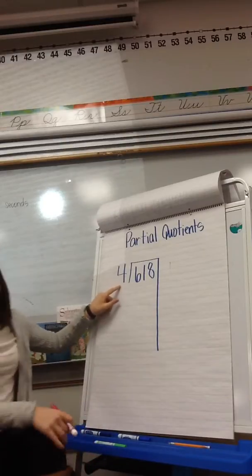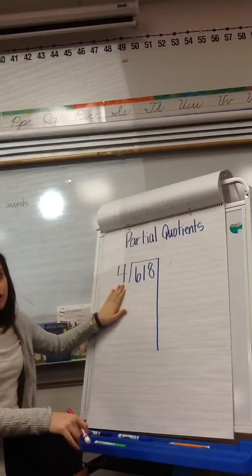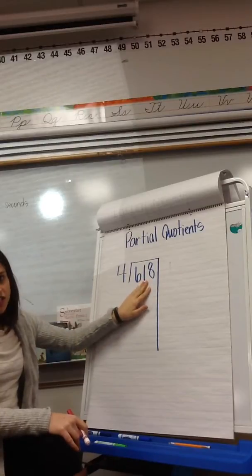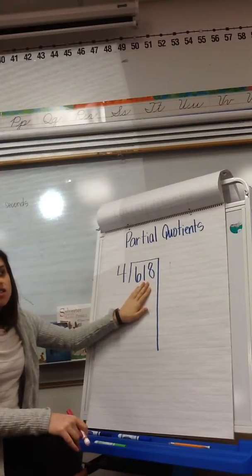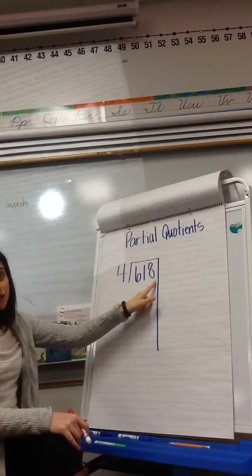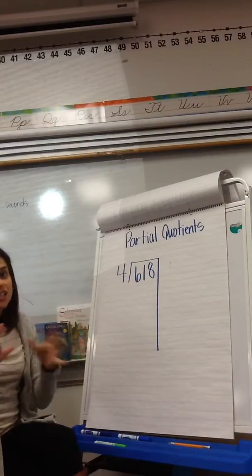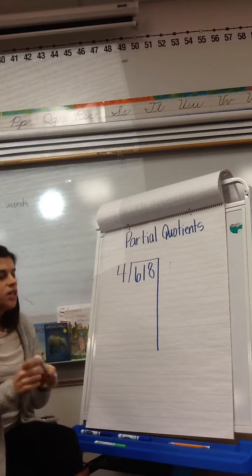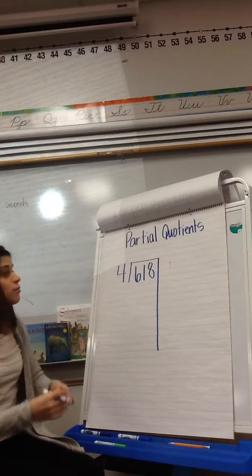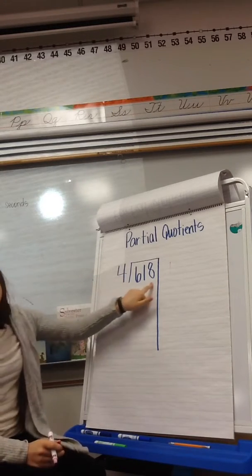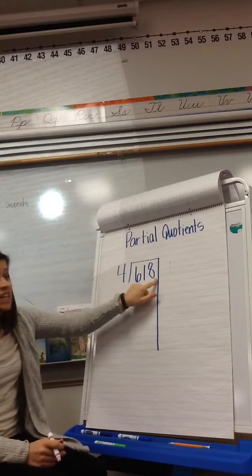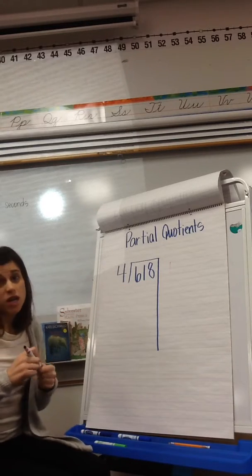So again, I'm going to think to myself, what number can I multiply by 4 to get closest to 618 without going over? Now that I have this three-digit number, instead of using 10, I'm going to go to the next easiest number, which is 100. I know that if I multiply 100 by 4, it won't go over 618. So I'll start with 100.